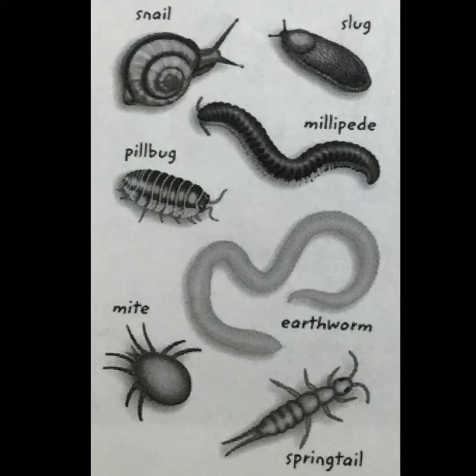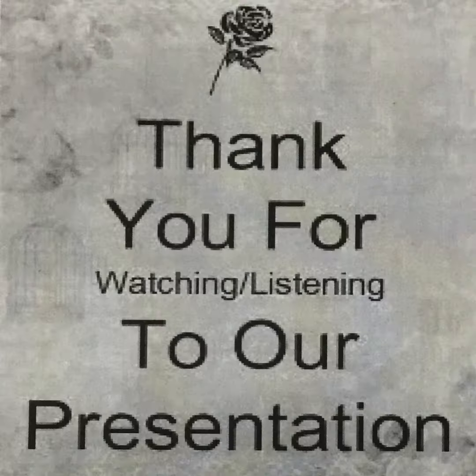Decomposers. Decomposers decompose dead animals into soil so the soil would be rich, allowing producers to grow and start the food web again and again.